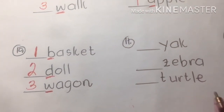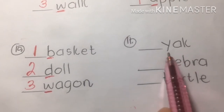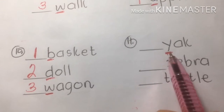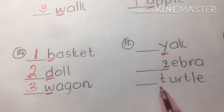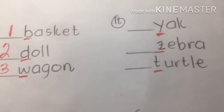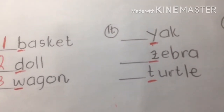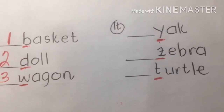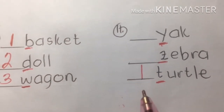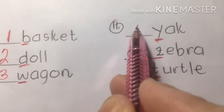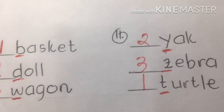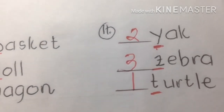Number eleven: yuck, zebra, turtle — these are animals. Yuck belongs to the carabao family. Underline the initial sounds — Y, Z, and T. The answer: turtle is first — T. Yuck is second — Y. And zebra is third — Z. So: turtle, yuck, zebra.